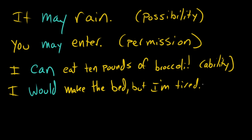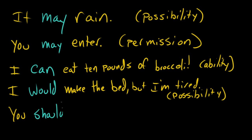Because the possibility exists, however remote, that the bed would be made by me — but I don't feel like it. So I'm using 'would' to offer an excuse. I'm saying this could possibly happen, this would happen, except for this one other problem, which is that I'm sleepy. You can also use modal verbs to give advice to someone, as in, 'You shouldn't do that.'